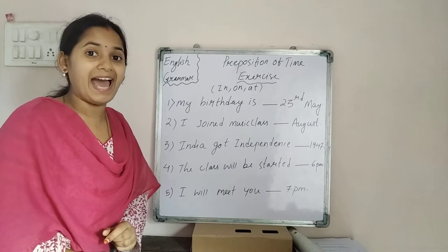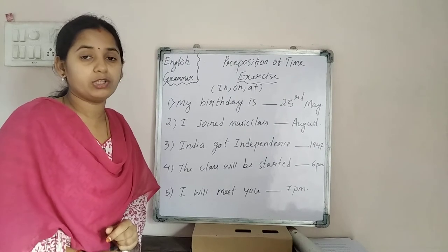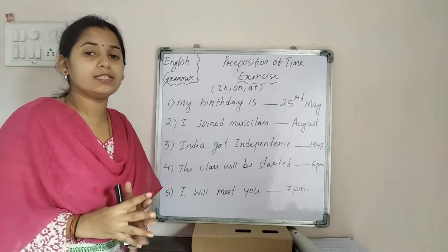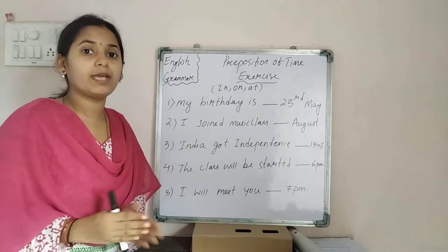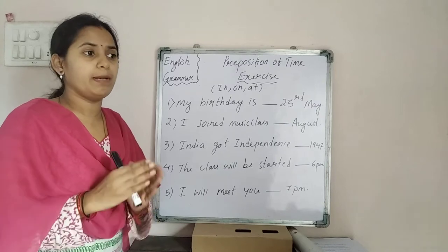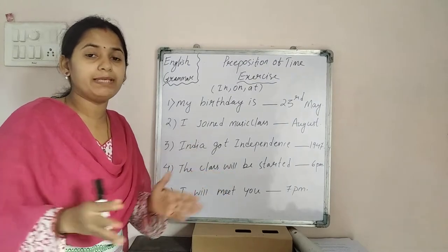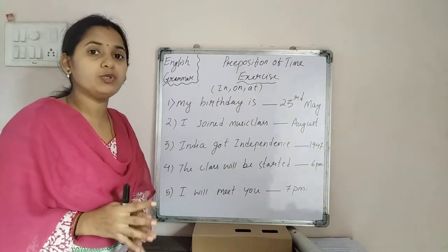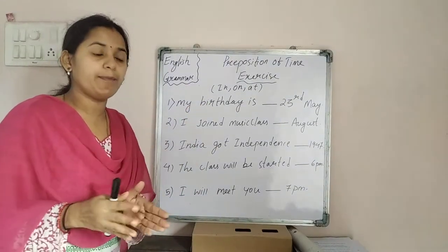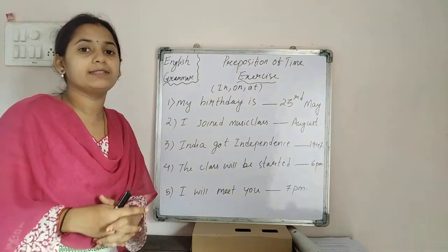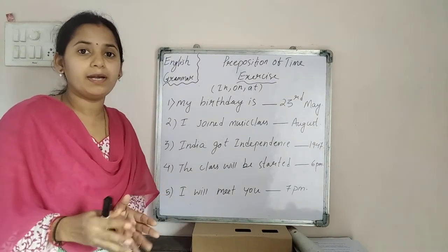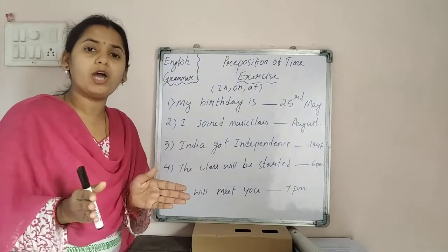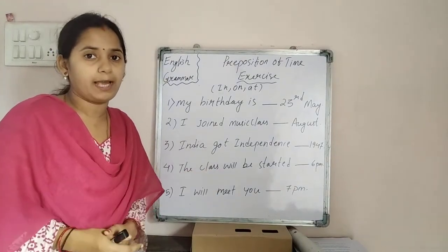In, on, and at are the basic prepositions of time. In is used before a month, a year, or a particular time period. On is used with dates or particular days like birthdays, Sunday, Monday, and so on. And at is used at a particular time or a small interval of time.